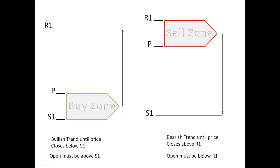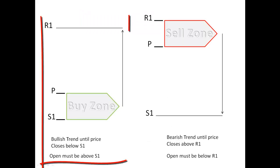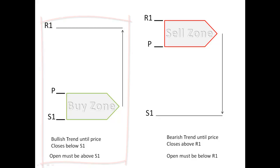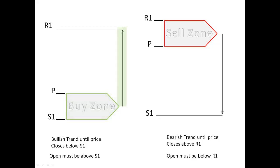So let's say that the market is in an uptrend. We're going to look over here on the left-hand side and we're going to see that we have a buy zone which is between the daily pivot and S1, with a target of R1. So if we have a bullish trend, then we want to be looking to buy within this buy zone, with our target again at R1.